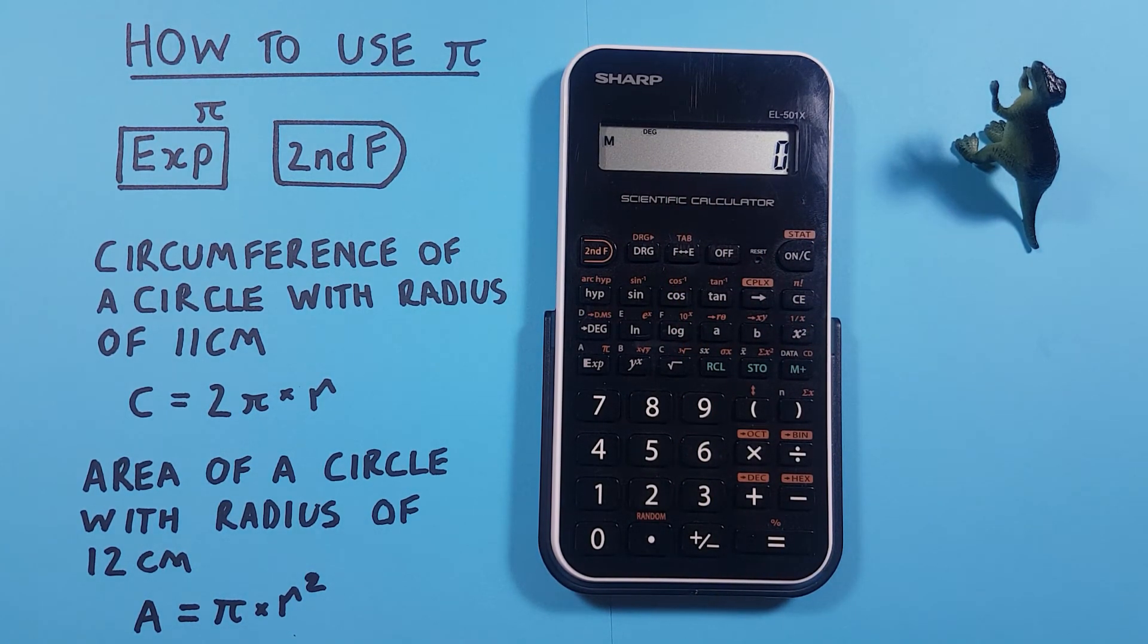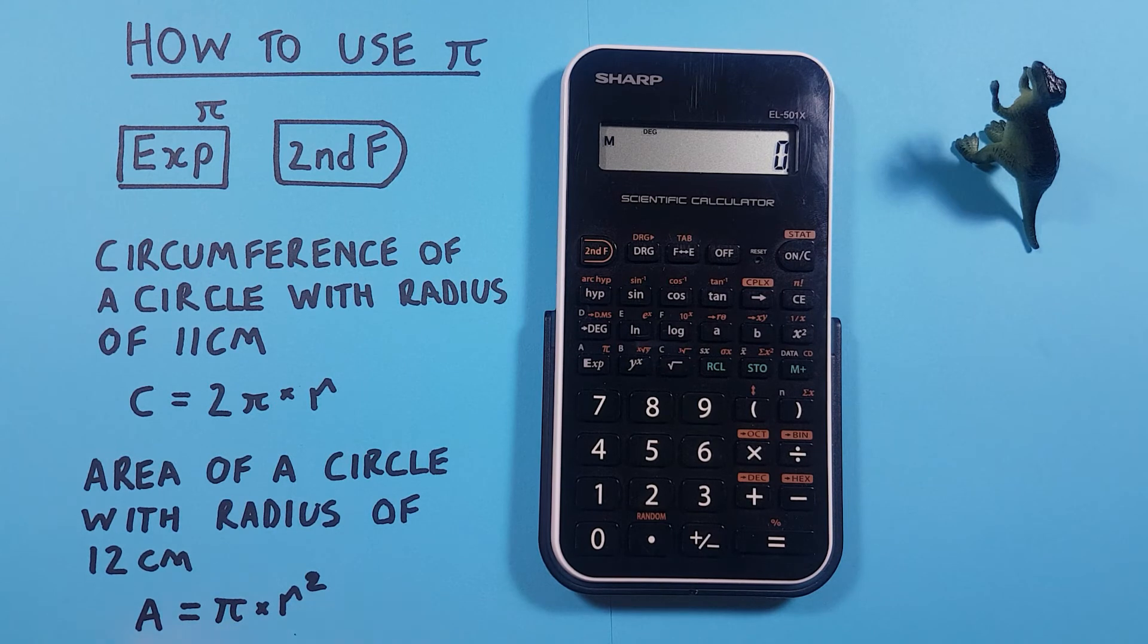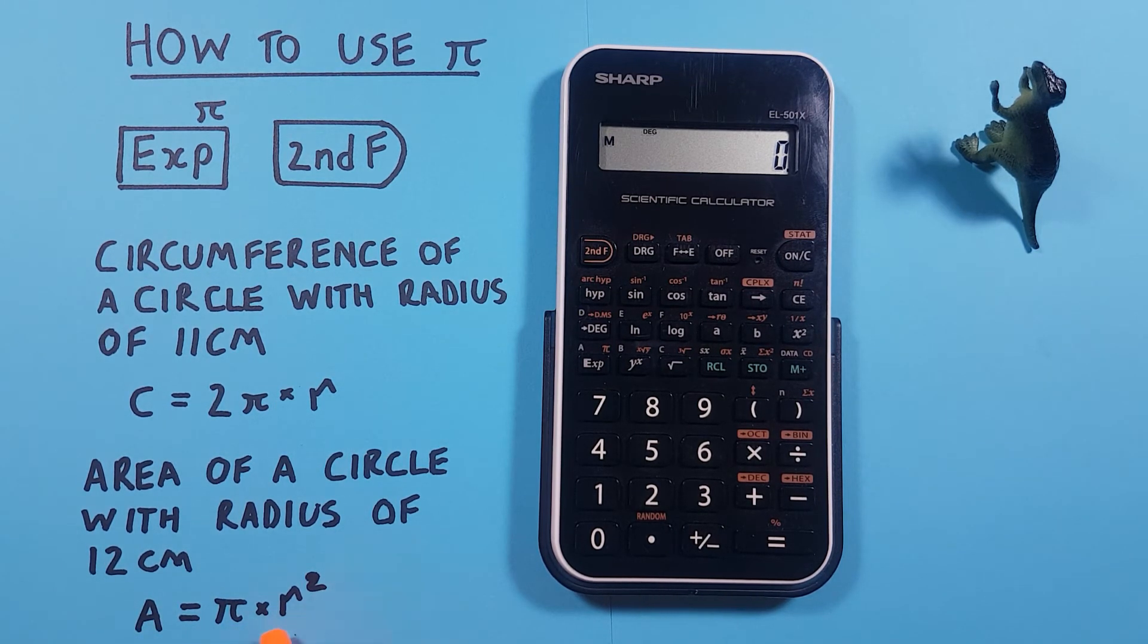In another example, let's say we wanted to find the area of a circle with a known radius of 12 centimeters. Again we can use this formula here: area is equal to π times R squared, or radius squared.